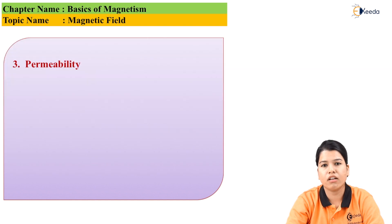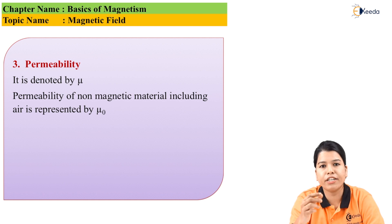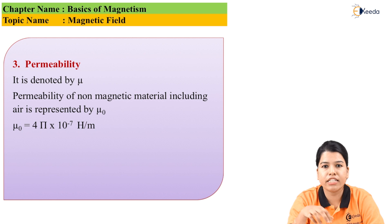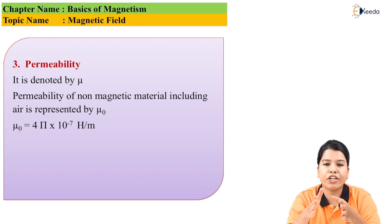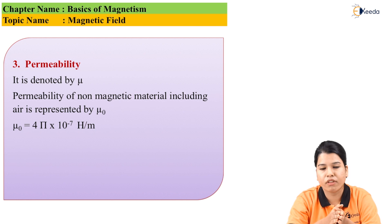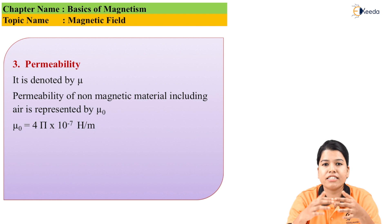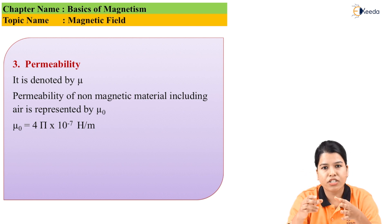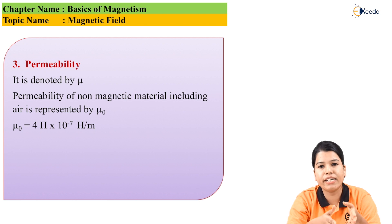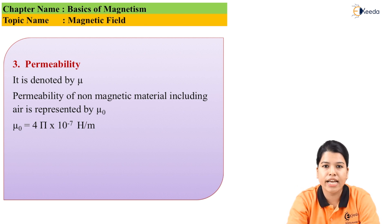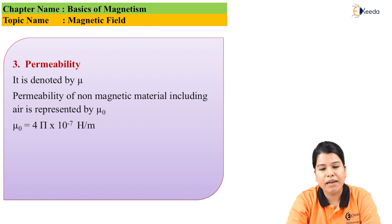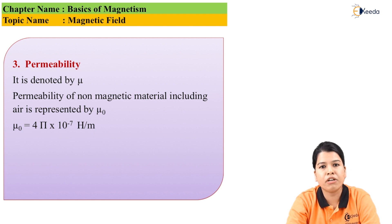The next point is permeability. The word permeability itself suggests the ability to permeate or penetrate. When a magnetic material is placed in a magnetic field, the property of magnetism is induced in it. Permeability is a measure of the degree by which magnetic lines of forces can penetrate a medium. This is called absolute permeability, represented by the symbol mu (μ). The permeability of non-magnetic material such as air is represented by mu zero (μ₀) and its value is 4π × 10⁻⁷ henry per meter.